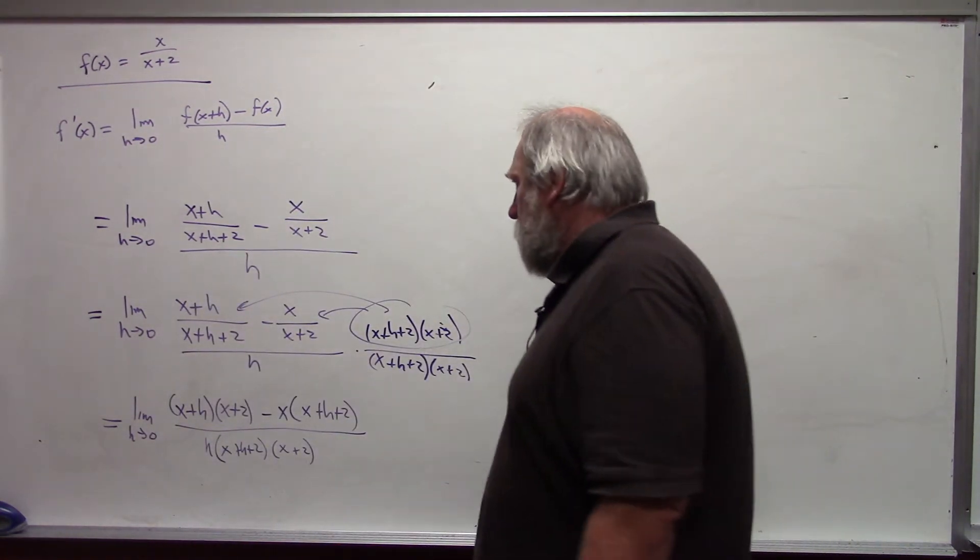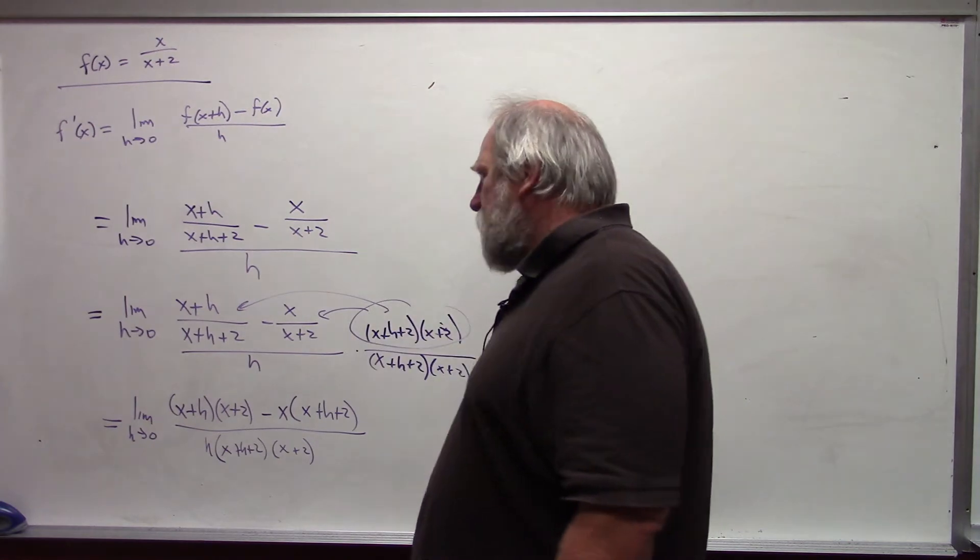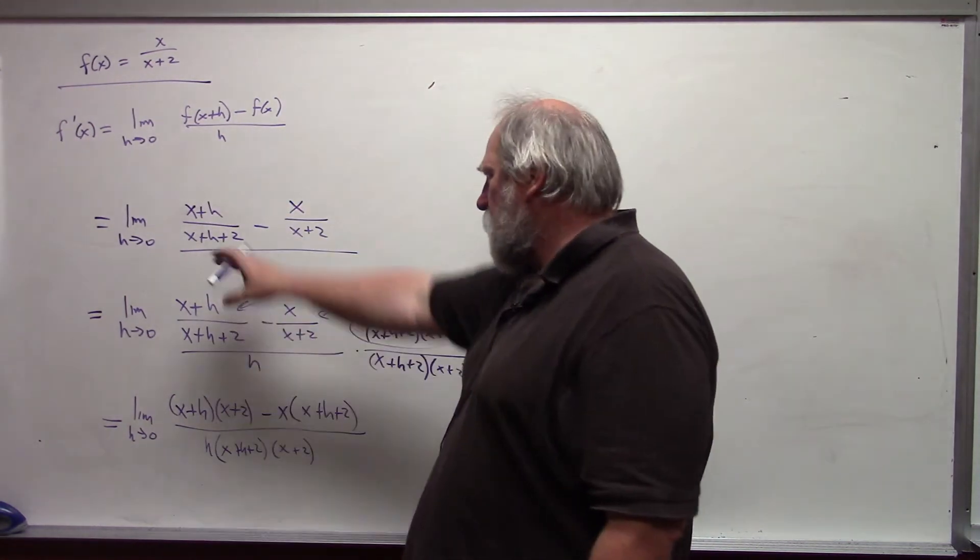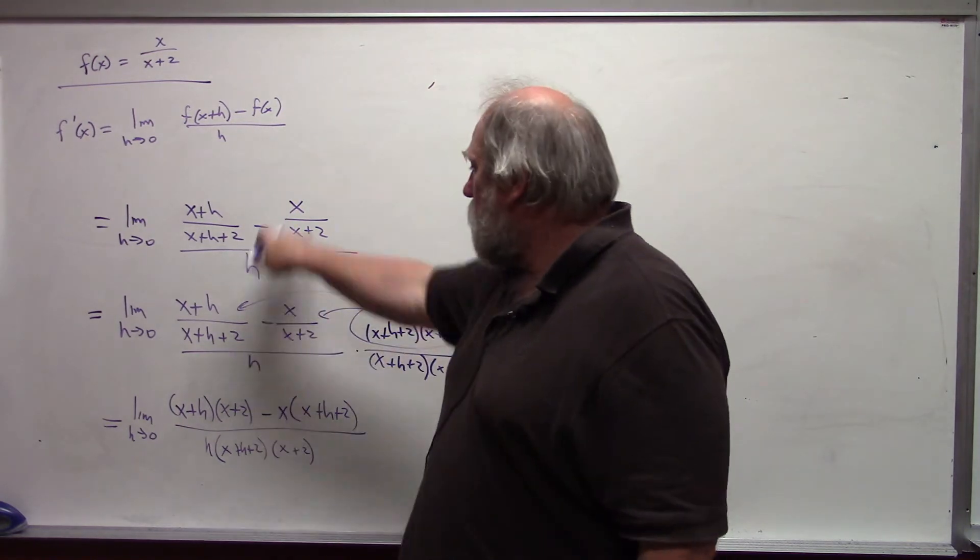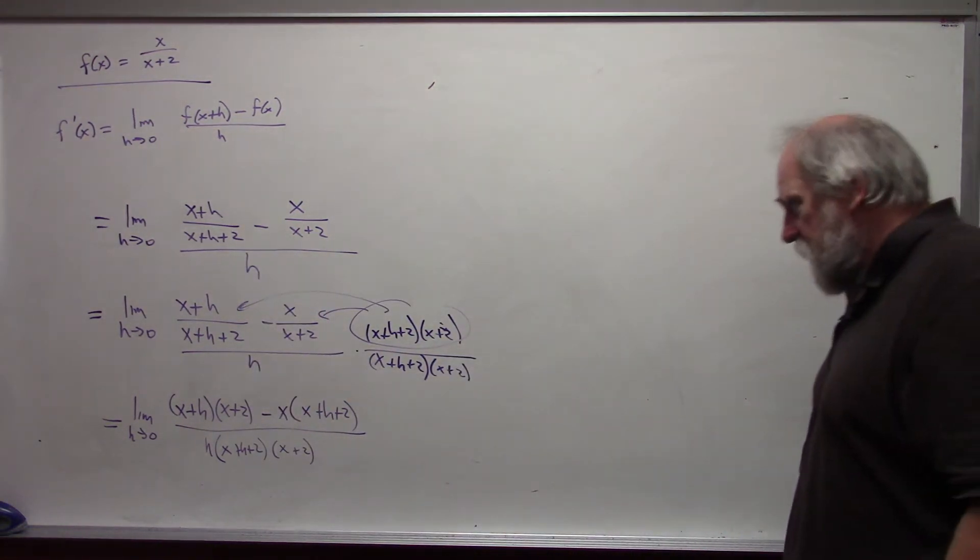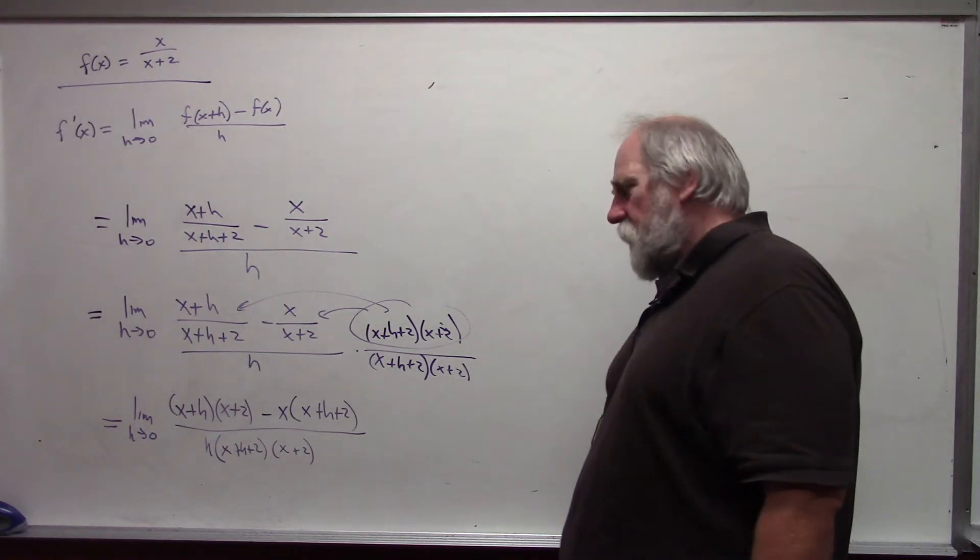And we have to do a bunch of algebra here. This limit, by the way, was obviously indeterminate, because if h is 0, then we get exactly the same thing subtracted. So the numerator is approaching 0 and obviously the denominator is approaching 0. It was indeterminate.